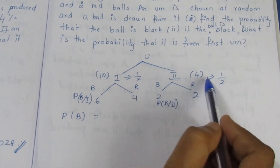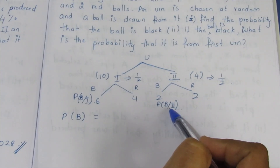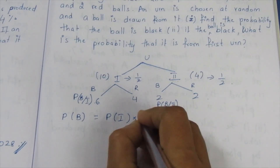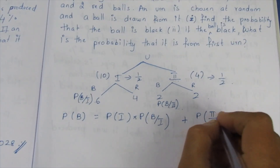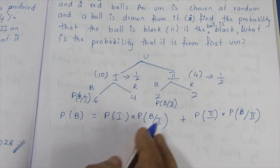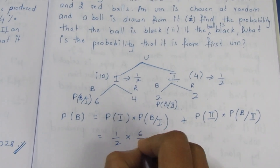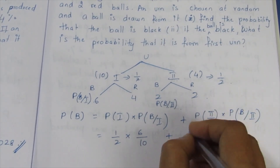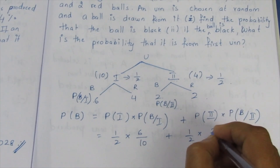We multiply: probability of selecting the second urn into the probability of getting a black ball from it. The formula is: probability of first urn into probability of selecting black in it, plus probability of selecting second urn into probability of selecting black in it. That gives us 1/2 into 6/10, plus 1/2 into 2/4.